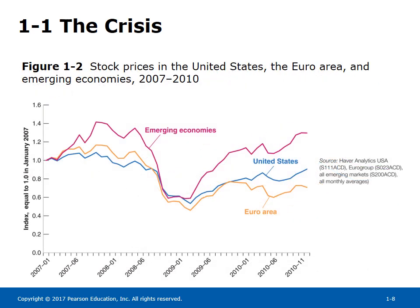How the financial crisis turned into an economic crisis is shown in Figure 1-2. By the end of 2008, stock prices in the US, Euro area, and emerging economies lost half or more of their value, causing consumers and firms to cut back on consumption and investment spending in the economy. Through trade and financial channels, the crisis spread to other countries.